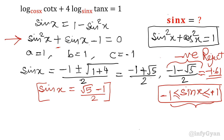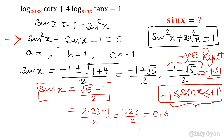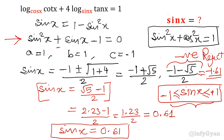So this is our required answer. If we calculate in decimal terms: (2.23 minus 1) / 2 = 1.23 / 2 ≈ 0.61. That means sin x is equal to approximately 0.61. This is a subjective question and this is the simplest way to solve it. Thank you so much for watching — please do subscribe to my channel if you liked the video, and thank you for your support.